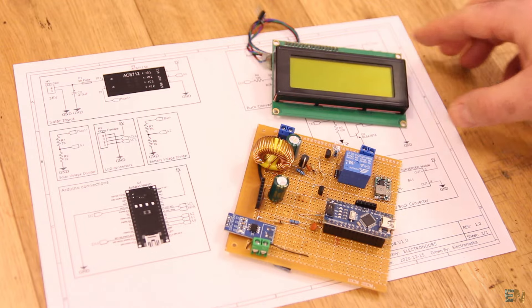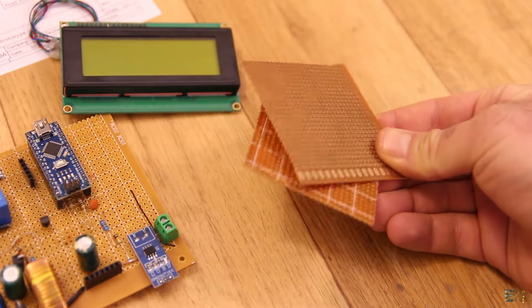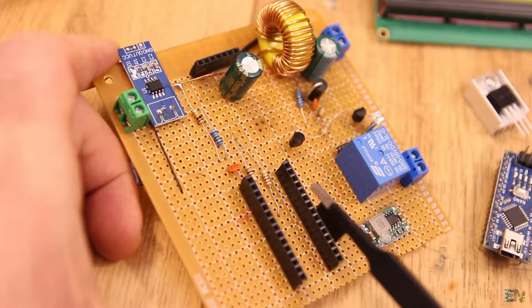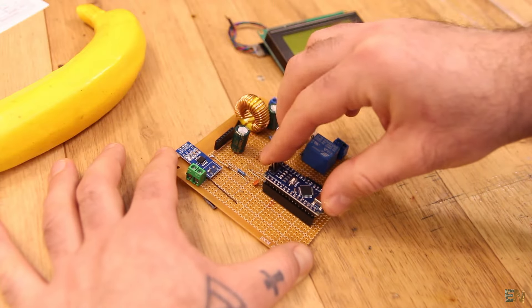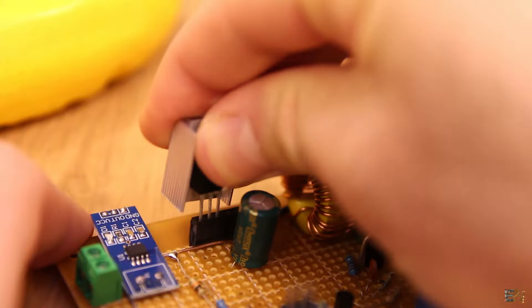In my case, I've used a piece of prototyping PCB and solder everything on it. I've used female pins so in case that I damaged something, I could change it easily. Remember that this is still a prototype and I will make a lot of tests.